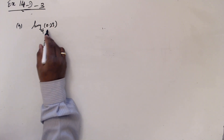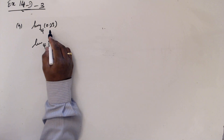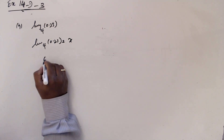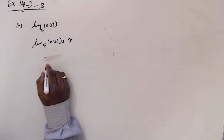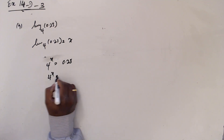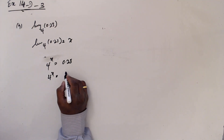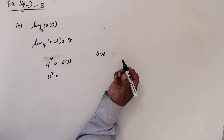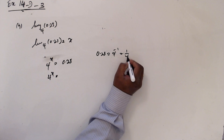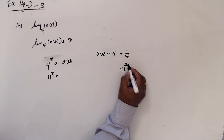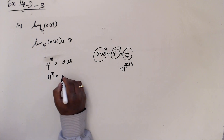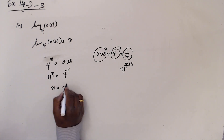This is log base 4 of 0.25 — we will take as x. Now 4 to the power x is 0.25. I need to write 0.25 in terms of 4. 4 to the power minus 1 is 1 over 4. 1 divided by 4 is 0.25. So 0.25 means 1 over 4, which is 4 to the power minus 1. So x equals minus 1.